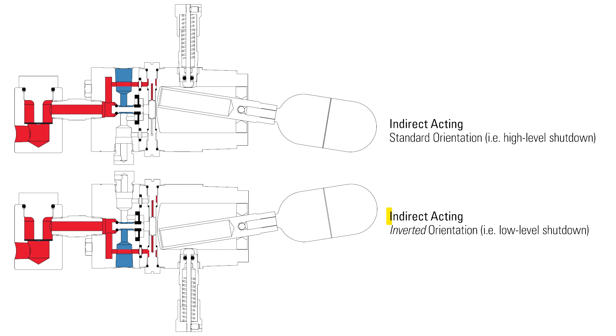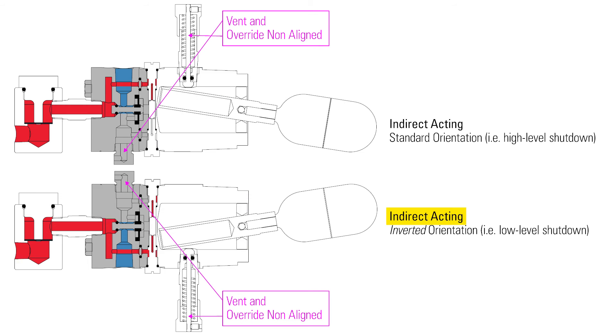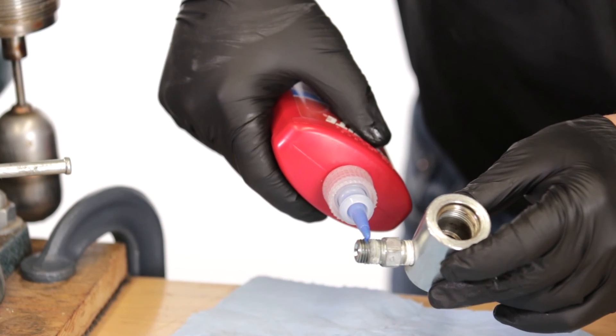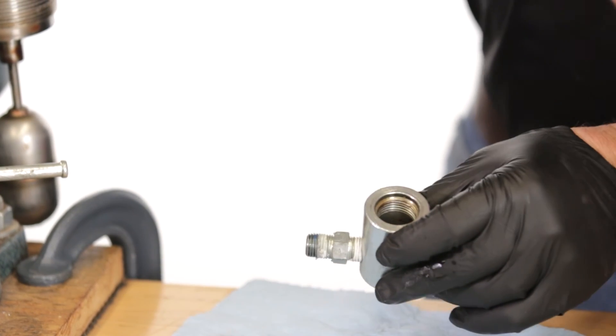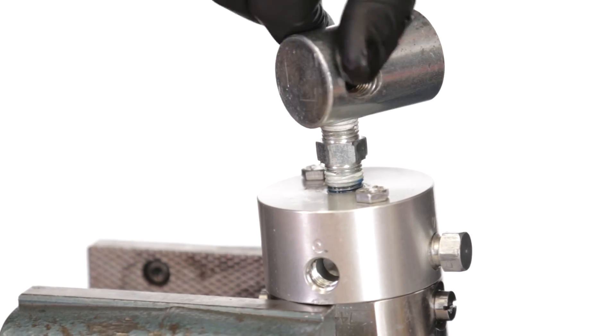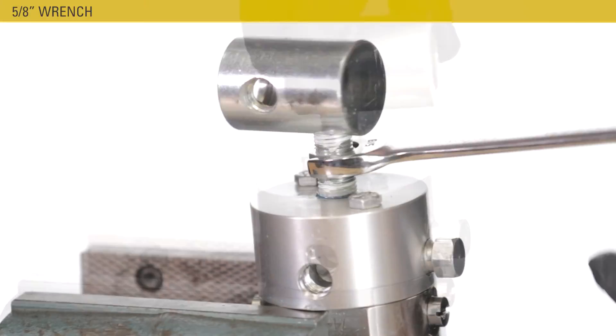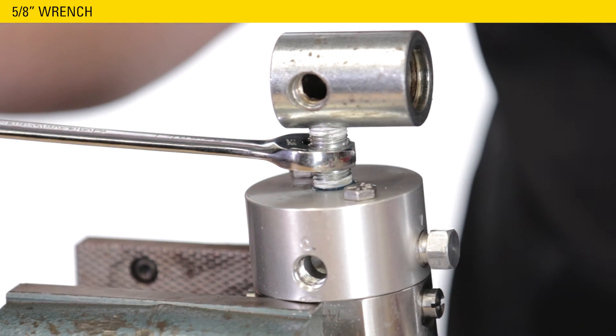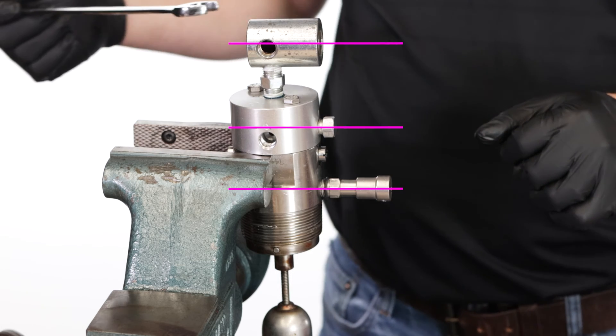For indirect acting, turn the pilot body so the vent plug is 180 degrees from the override. Apply primer and Loctite to the end of the nipple. Both ends if you fully remove the nipple from the filter body. Install the filter and nipple onto the pilot body using a 5-8ths wrench. Orient the filter body in line with the other features on the housing.